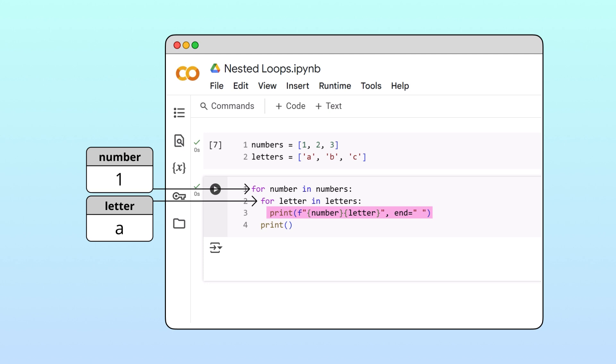At this point, the number variable is 1 and the letter variable is a, so Python prints 1a in the output box.